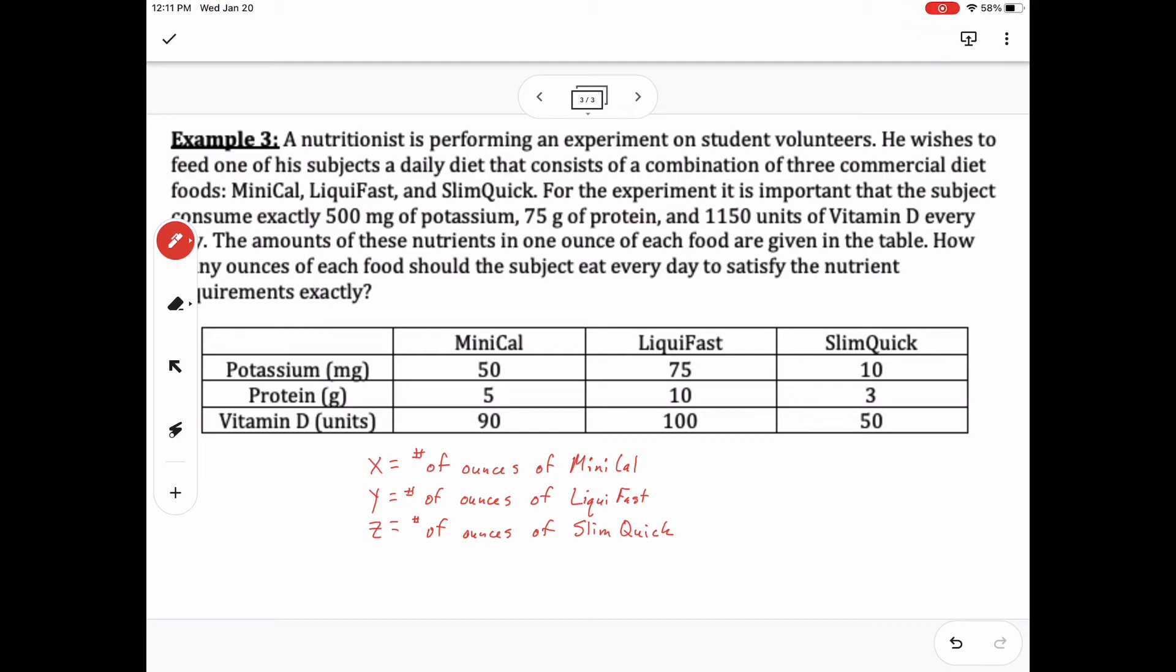And now we need to write equations that match that. If I want to write my equations, I kind of need to write equations based on the requirements that they need. So if they need to have a certain amount of potassium, then I should write an equation for potassium. So mini-cal has 50 mg of potassium, 75 in liquefast, and 10 in slim quick.